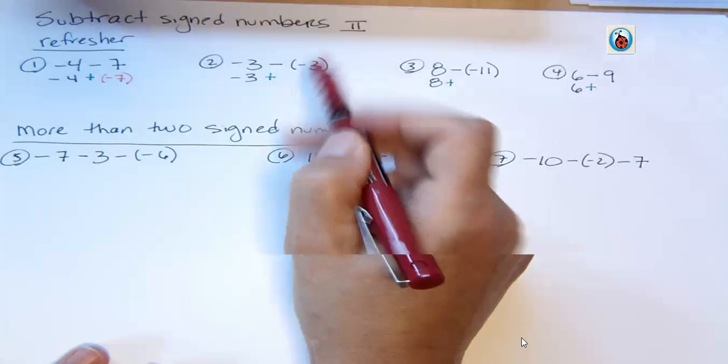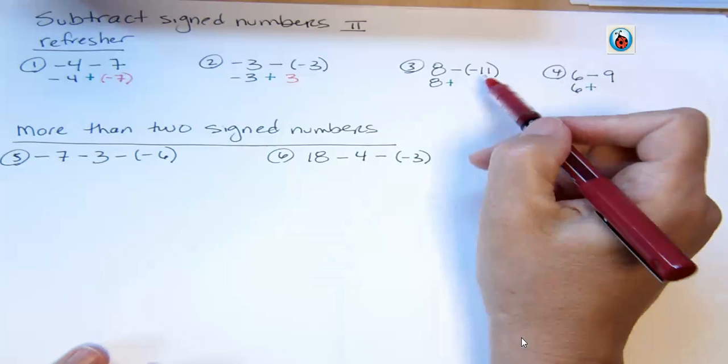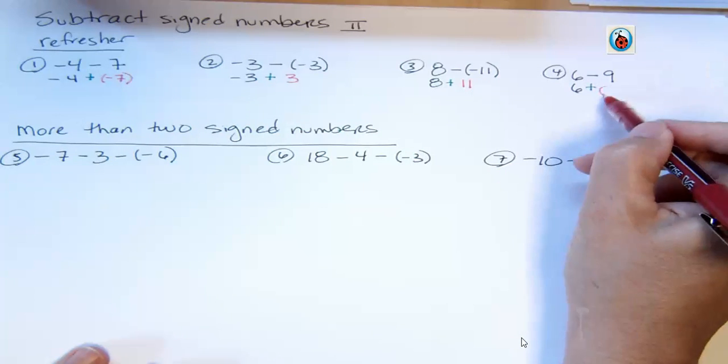So seven is positive. We're going to change that into negative. Here we had a negative three, so we're going to change that into positive. Here we have a negative eleven, so that becomes a positive. And here we had nine, so that becomes negative nine.